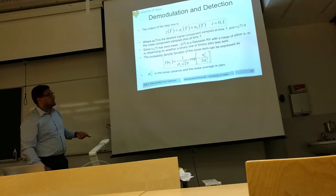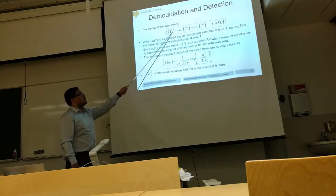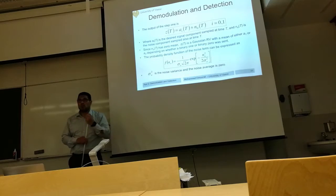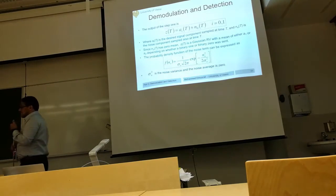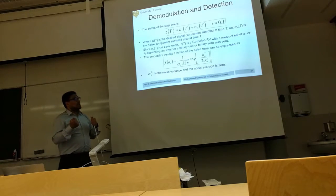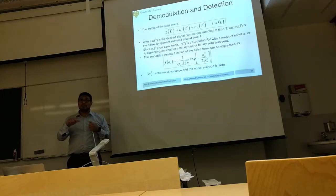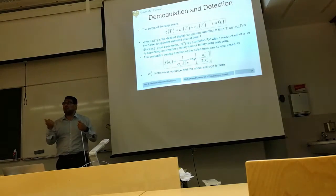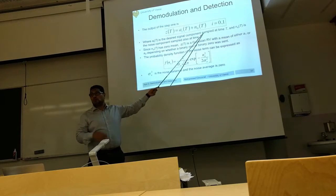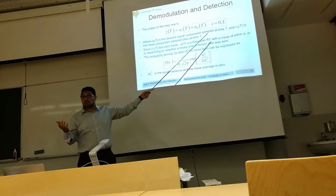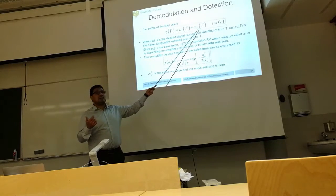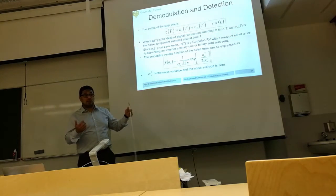The received value Z(T) equals a_i(t) plus N0(T). Although a_i(t), which can be a0 or a1, is known at the receiver — it is the transmitted symbol and we know it — the noise is unknown. We know the statistics of the noise: it is Gaussian with zero mean and some average power. But we don't know the exact value of the noise.